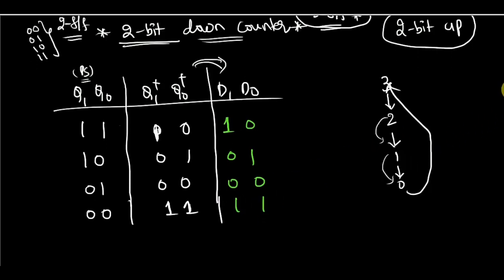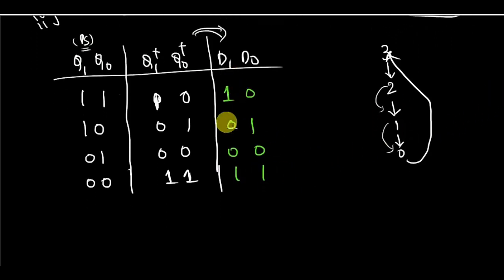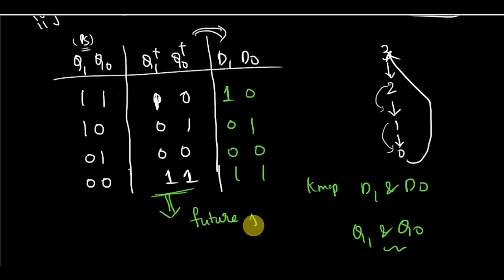Now what you have to do is you have to write the input, these equations, that is the K-map equations of D1 and D0 in terms of Q1 and Q0. In the previous video, I already told you why we should not use Q1 plus and Q0 plus to write the input equations. Because if you use these inputs, which are called as future inputs, then the system will become non-causal, which means you can't realize it. Because the system which depends on future inputs is called as non-causal system and you can't design such type of system.